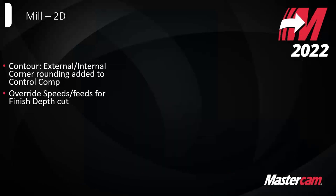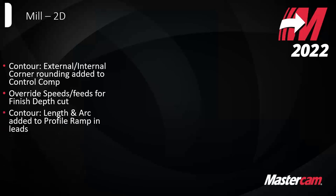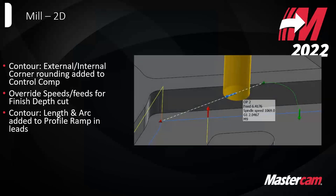We also added override speeds and feeds for finish depth cut — more control over feeds and speeds when getting into the final finishing part of a given tool path on the 2D side. We also added length and arc to profile ramp lead-ins. If you were using ramp before, you couldn't turn on cutter comp before it entered the ramp. Now this length and arc command on the ramp allows the machine to apply comp before the cut starts, rather than waiting until the bottom of the ramp.